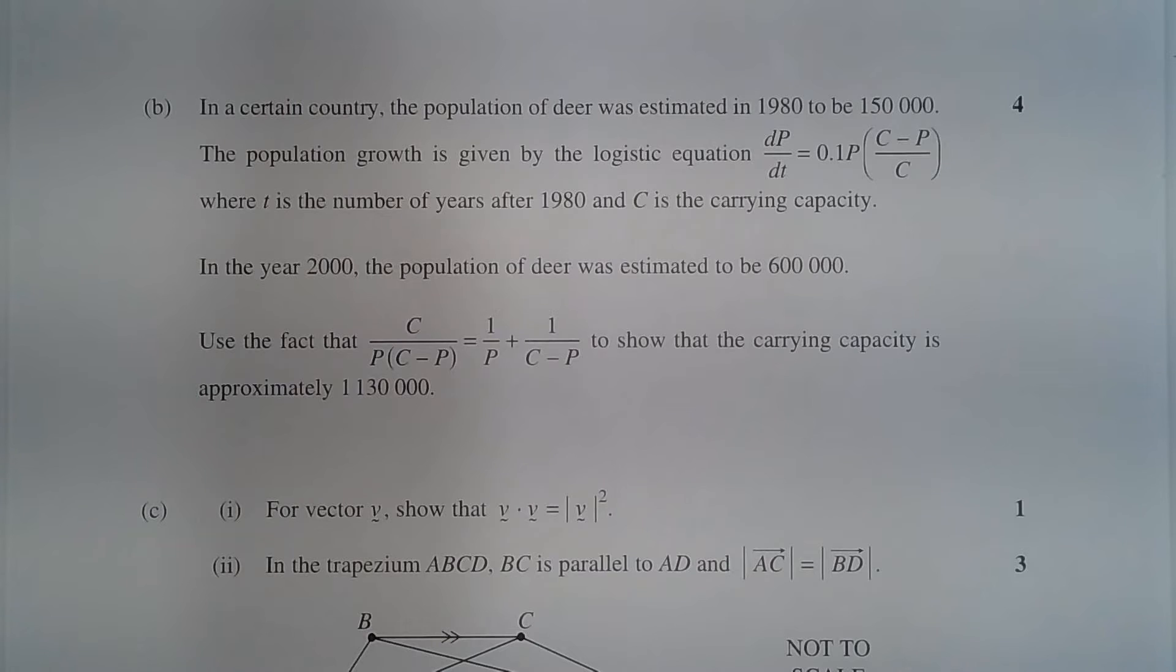In the year 2000, the population of deer was estimated to be 600,000. Use the fact that c over p(c minus p) equals 1 over p plus 1 over (c minus p) to show that the carrying capacity is approximately 1,130,000.